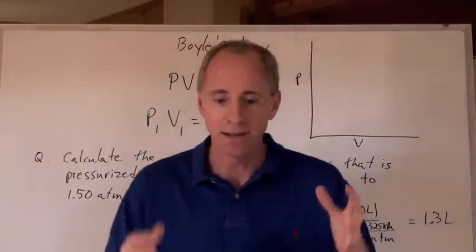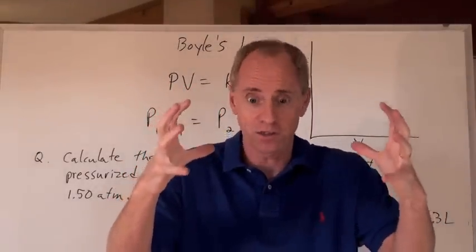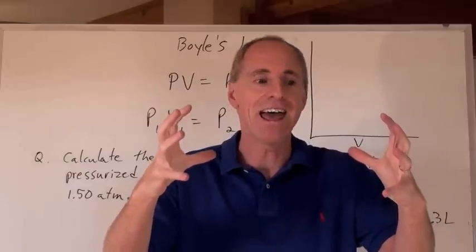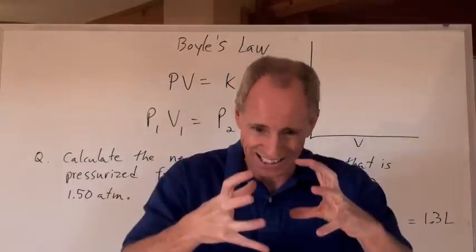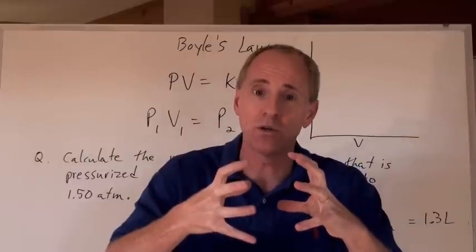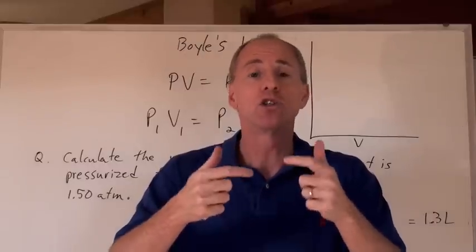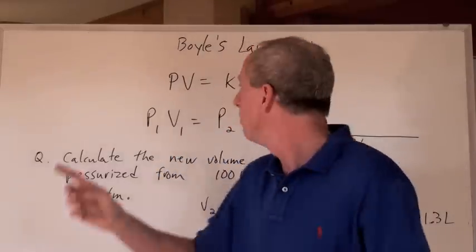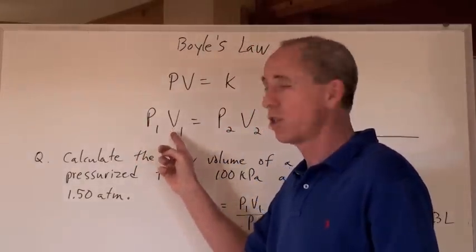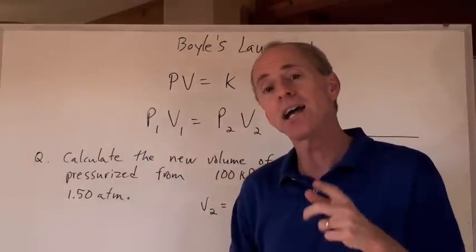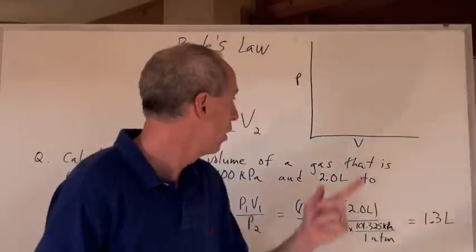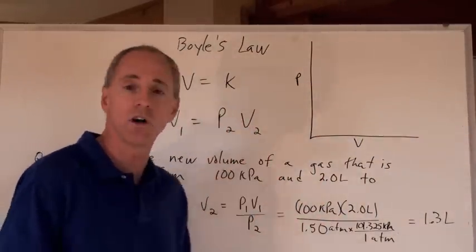he found this mathematical relationship that P times V equals K, a constant, which meant that if you took a gas, a volume of gas, this much gas, let's say, and you know the pressure of it, then you go ha ha! And you actually squeeze that into a different volume, the pressure goes up to a point where when you multiply the original pressure and volume together, you actually get the same number when you multiply the new pressure and volume together.